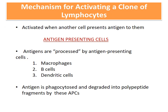Clones are activated when antigen is presented to them like a gift by antigen-presenting cells, or APCs. The three major types of APCs are macrophages, B cells, and dendritic cells — with dendritic cells, located throughout the body, being the most potent. APCs phagocytose the antigen, degrade it into smaller polypeptide fragments, and present these to the clones of lymphocytes on their surfaces.